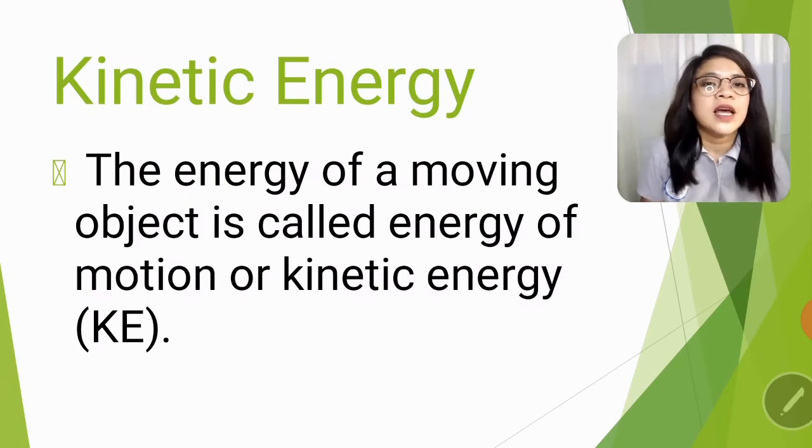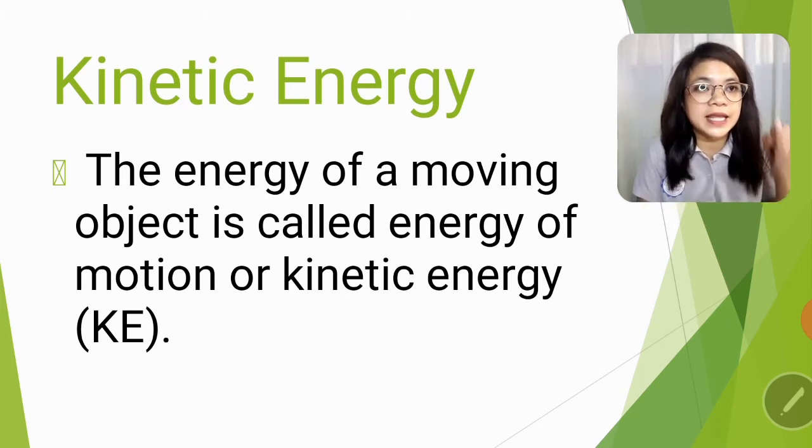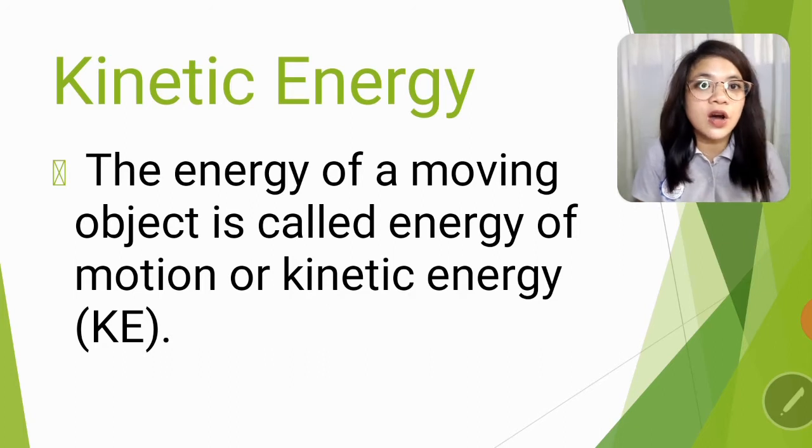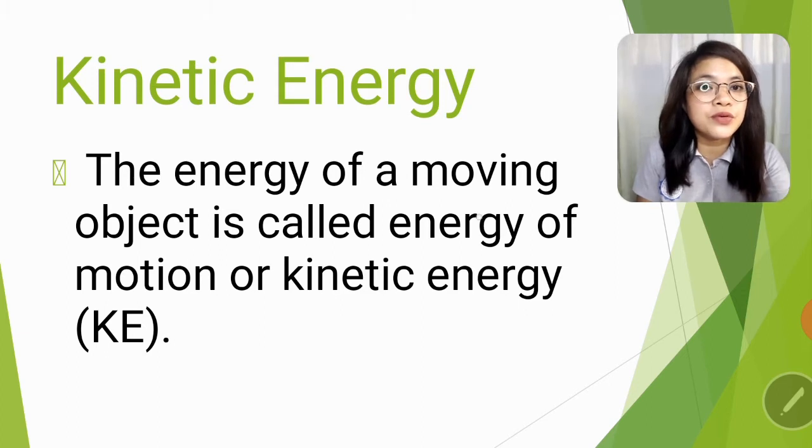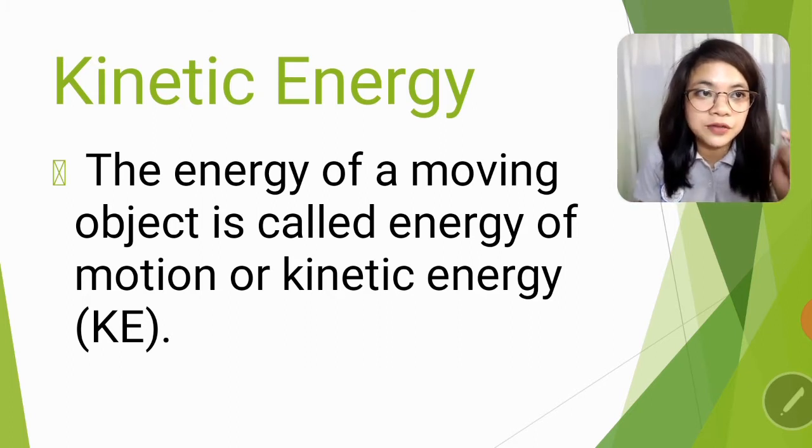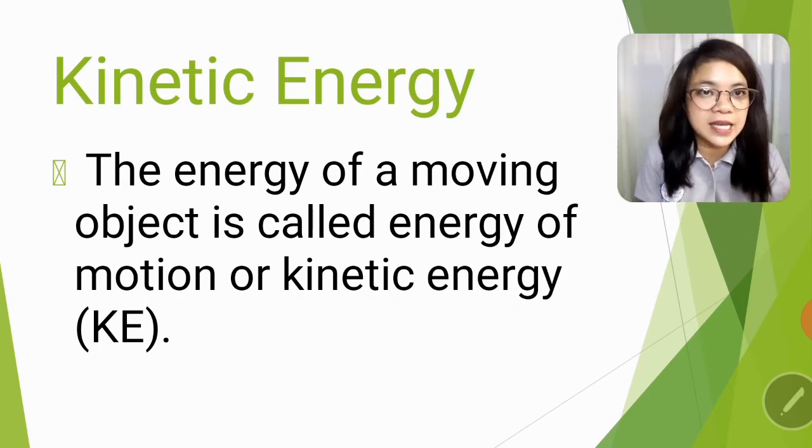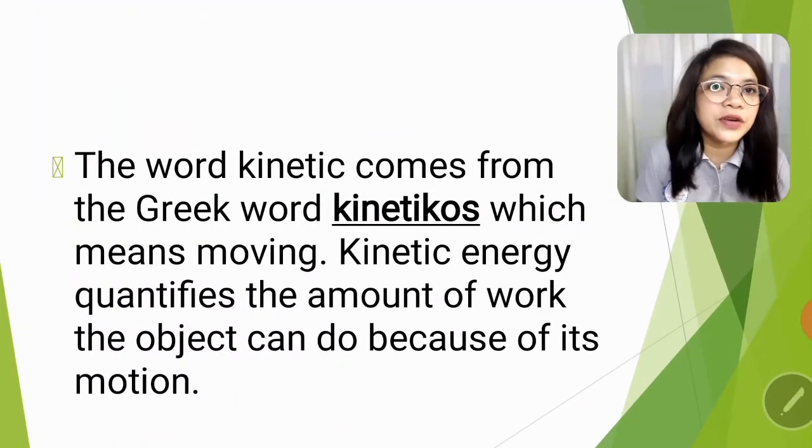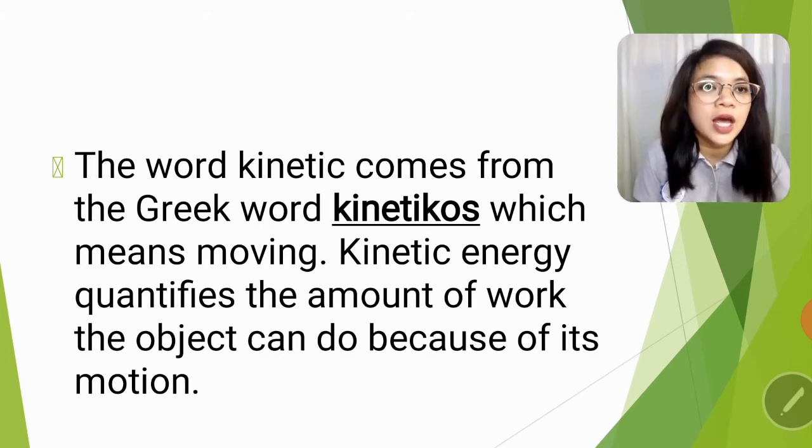So let us now define first kinetic energy. The two types of energy that we're going to tackle for this topic is the kinetic and the potential energy. So let's focus first on kinetic energy. That is the energy of a moving object. Remember those words, moving object. It is called the energy of motion or kinetic energy. Kinetic energy or energy of motion is just the same. The simpler acronym for that is KE, kinetic energy. The word kinetic comes from the Greek word kinetikos, which means moving. Kinetic energy quantifies the amount of work the object can do because of its motion.